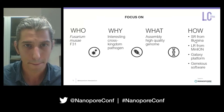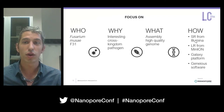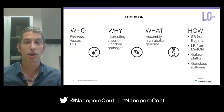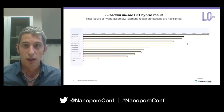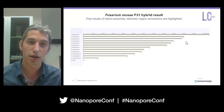For this reason, we focused our attention on a Fusarium musae strain isolated from banana. The origin of this fruit was the Dominican Republic, and we aimed to produce a good reference for the species. We decided to use a hybrid approach, and using this approach we were able to produce a telomere-to-telomere chromosome-level assembly of this strain.